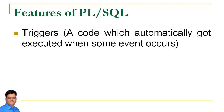For example, whenever we apply a primary key constraint on a column, the system checks every time we insert data for uniqueness of the key and its not-null value. That code to check unique or non-null value is executed automatically whenever we insert data — these types of codes are actually implemented internally by use of triggers. We can create our own user-defined triggers with the help of PL/SQL, which makes it a very powerful language. We will discuss triggers in detail in coming sessions.